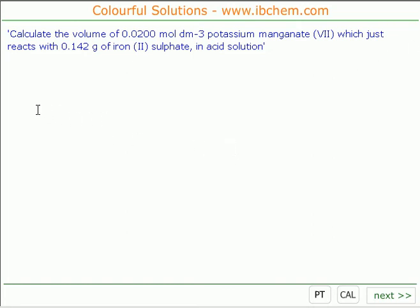Okay, we're going to tackle this question, an A2 chemistry question. Calculate the volume of 0.02 moles per litre potassium manganate VII, which just reacts with 0.142 grams of iron II sulphate.